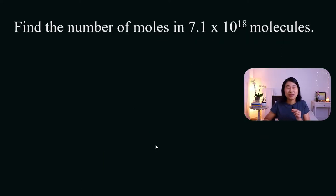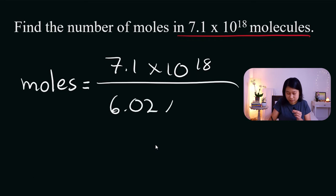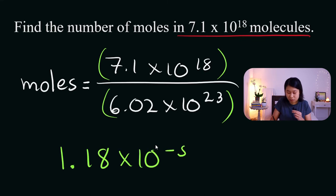Now on your own, use method number one and see how many moles are in 7.1 times 10 to the 18 molecules. We're going to use the equation again, which says that the number of moles is going to be equal to the given number of molecules, which in this case is going to be the 7.1 times 10 to the 18 molecules. And we're going to divide by Avogadro's number. Again, keeping these numbers in parentheses, we're going to have 1.18 times 10 to the negative 5 moles as our answer.